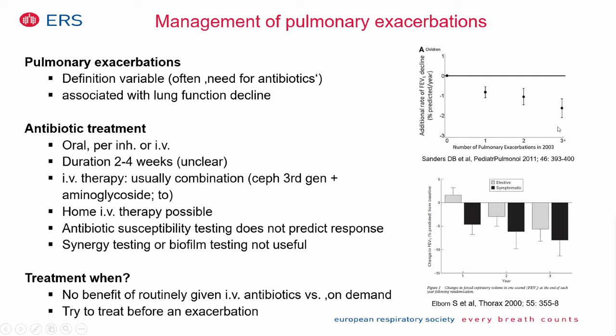Depending on the bacteria, you can possibly treat an exacerbation with oral antibiotics, but often you will need intravenous antibiotics. Treatment duration is usually two weeks, sometimes longer, though there is no clear benefit from longer courses. For exacerbations with Pseudomonas aeruginosa, you usually use a combination of two antibiotics.